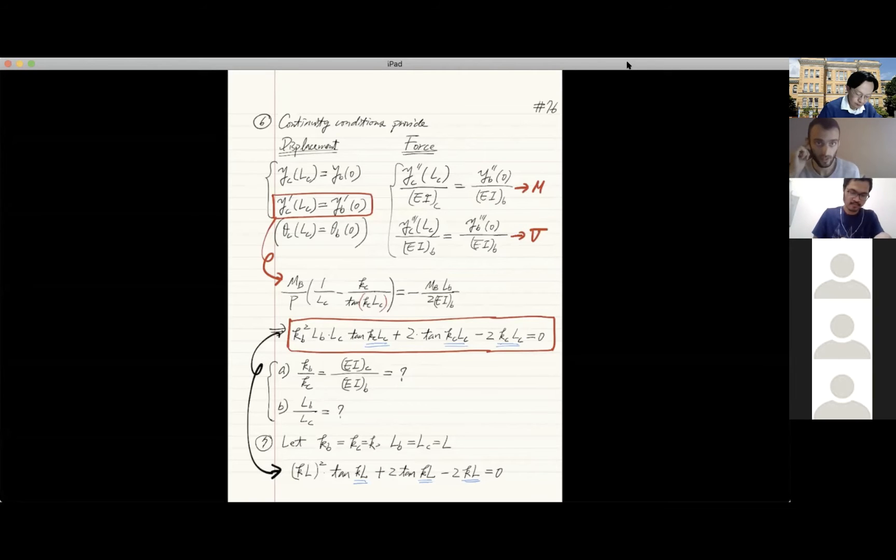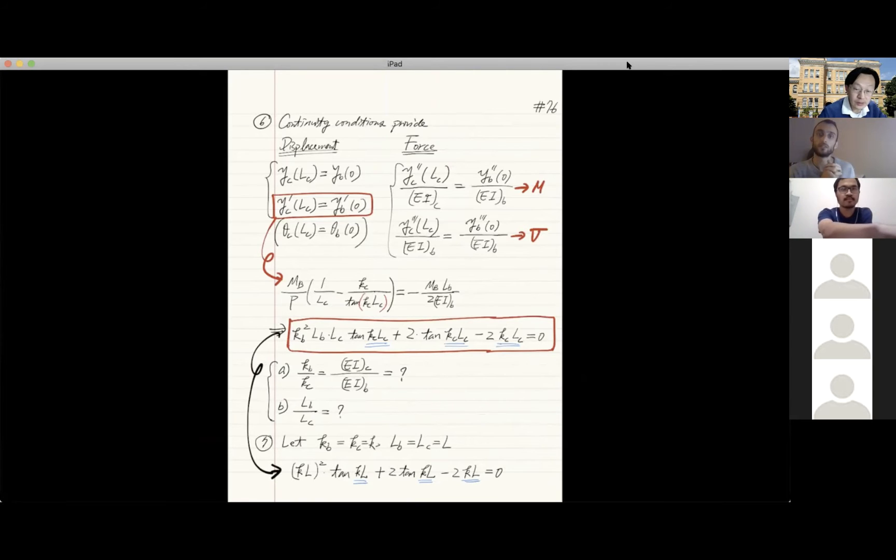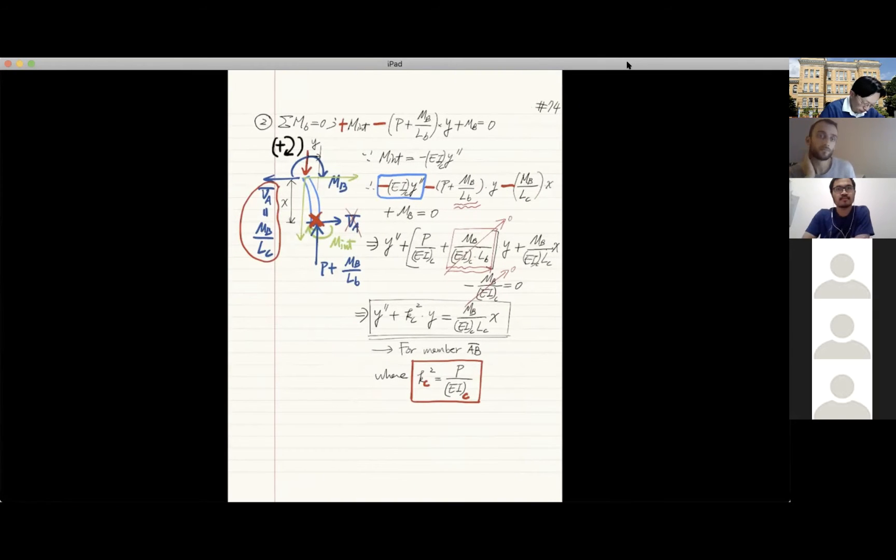One question on the displacement continuity conditions. On the first one where you say Yc, so the deflection of the column at Lc is equal to the deflection of the beam at zero. Isn't Yc a different direction than Yb, because your coordinate system is now rotating 90 degrees? The answer is yes, we use our reference coordinate system to define Yc and Yb. For Yc we measure it from the bottom, for Yb we measure it from point B.